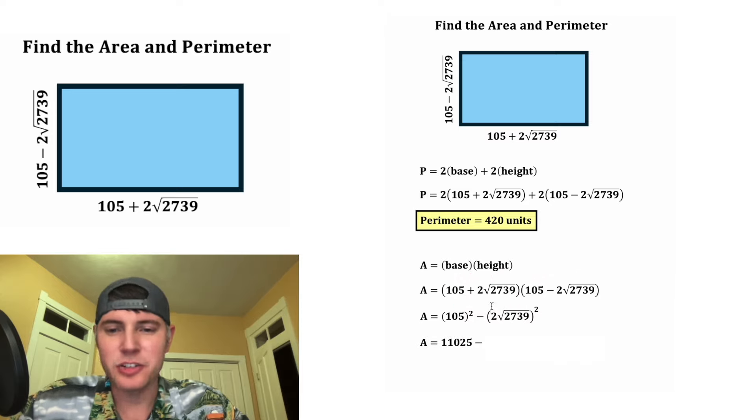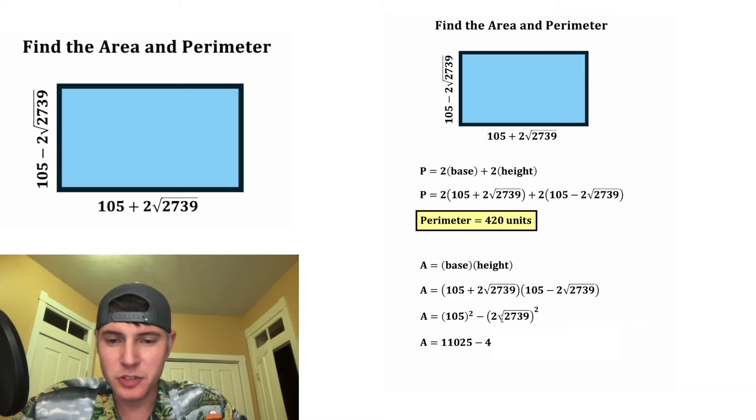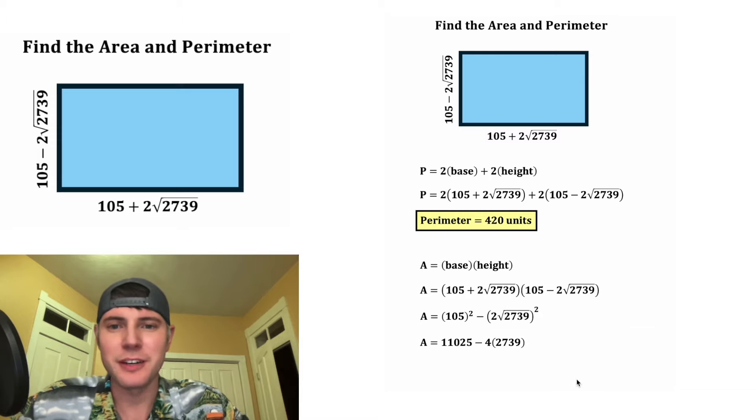105 squared is 11,025, and we can subtract 2 squared, which is 4, times (√2739)² which is 2739. 4 times 2739 is 10,956. And 11,025 minus 10,956 is equal to 69. Nice!